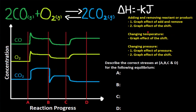Let's try this practice problem — you can pause and work through it yourself. Describe the correct stresses at A, B, C, and D. At A, everything is increasing first, so this has to be a pressure change. Since everything is increasing, pressure is increasing. Counting gas moles: reactant side has 3 total, product side has 2. When pressure increases, point at the smaller number — shift right. A shift right increases products and decreases reactants. So the correct stress at A is increasing pressure.